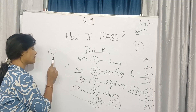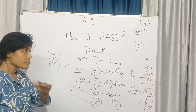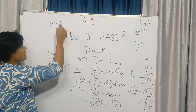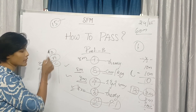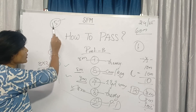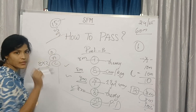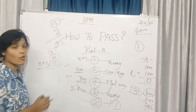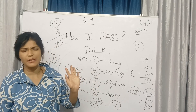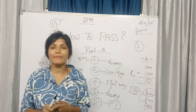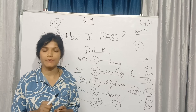If you are prepared with any 3 or 4 chapters, you can attempt 3 long questions plus Part A and Part C. Out of 24 marks in Part B (8 × 3 = 24), you can score 15 marks. Adding 5 marks from Part A and 5 marks from Part C for attempting, that's a total of more than 25 marks — definitely passing marks.